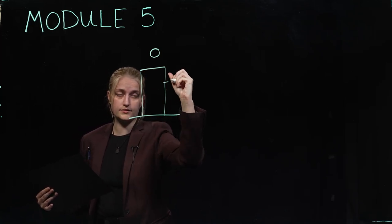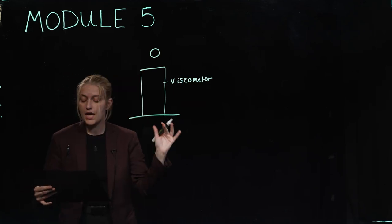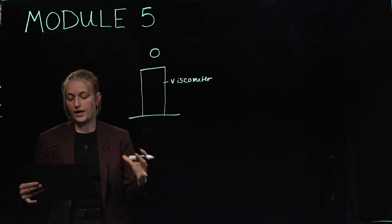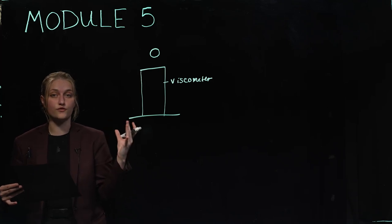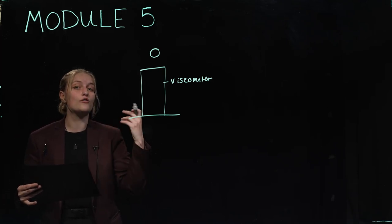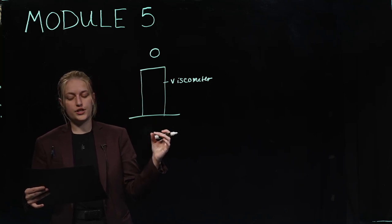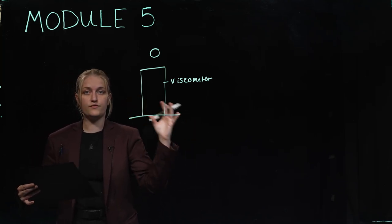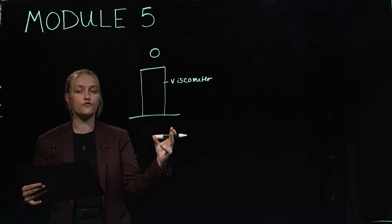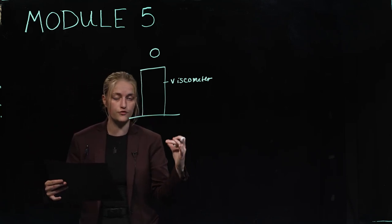This is obviously a viscometer. What is viscosity? Viscosity is a property of a fluid which indicates its resistance to flow. Sometimes people will say it's how thick something is, and there is a correlation between thickness and viscosity, but a more precise explanation would be that it is the resistance to flow.